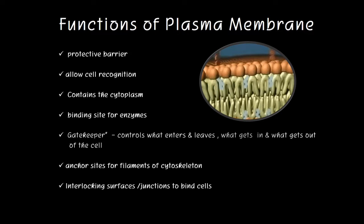The plasma membrane is an anchor site for filaments of the cytoskeleton. And finally, the plasma membrane is an interlocking surface or junction for the cell to bind.